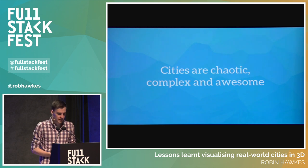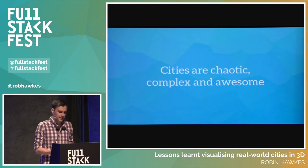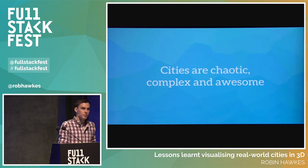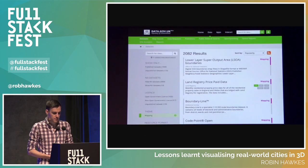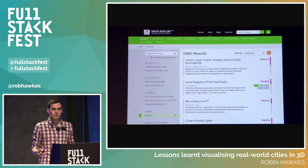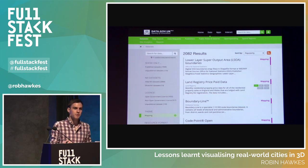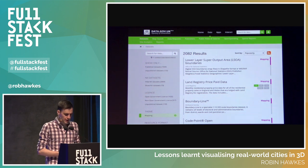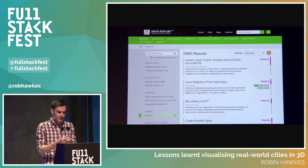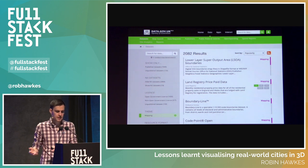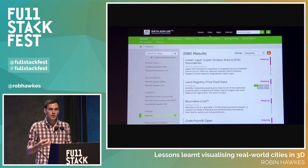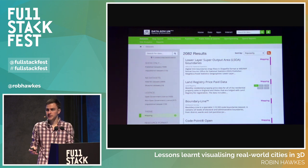Cities shouldn't work, but they do. You can't fully control them, which makes it even more important to be able to understand them — not only so we can make them work more efficiently, but also so we can understand the complexity as the citizens living within them. There's a huge amount of powerful data locked away within cities, in places like data.gov.uk in the UK, as well as a large number of other private and public repositories. What if you could create a tool that allowed people to see real-world cities, overlay data upon them, and combine it to better understand their cities and their place within them?